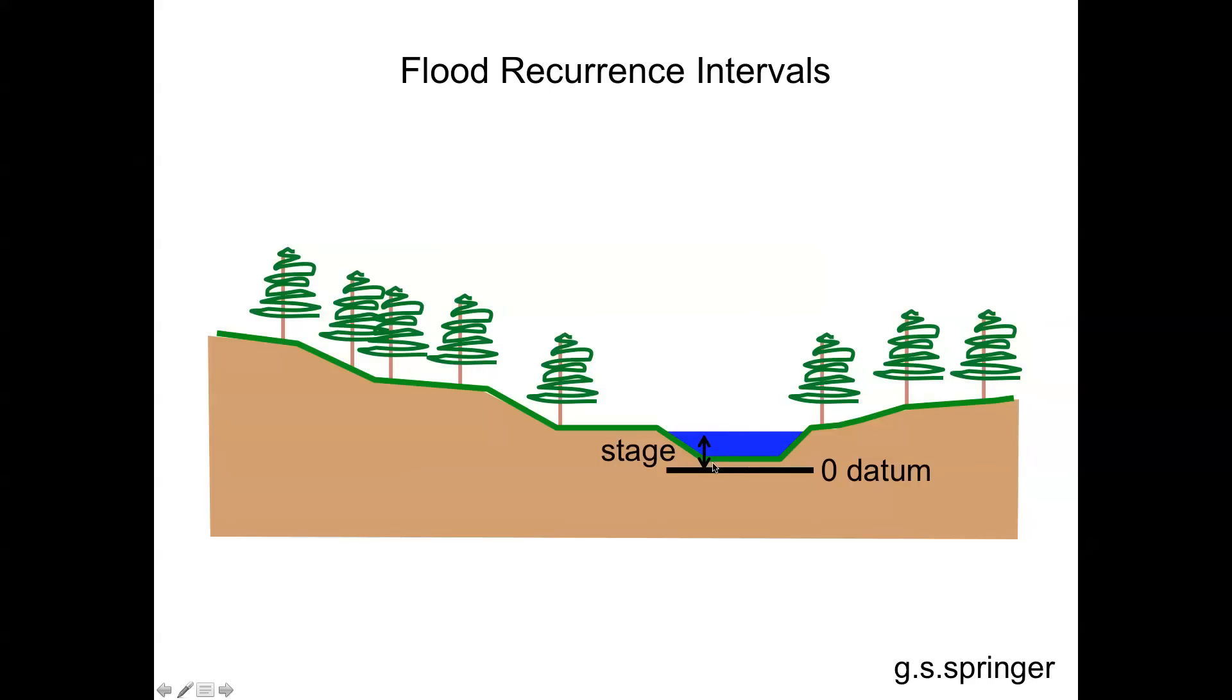The problem with depth is that the bottom of the river channel may go down, it may go up over time, and so it's not necessarily consistent between individual floods. So we talk about stage, which by using a zero datum, then we're always talking about where the water surface is relative to something that we know, and that's our datum.